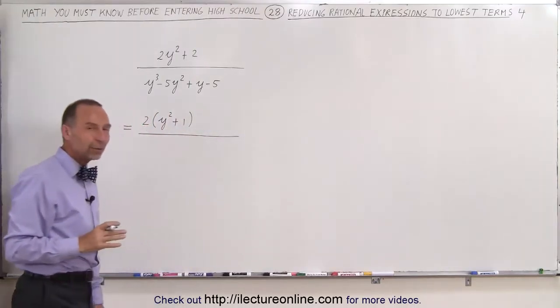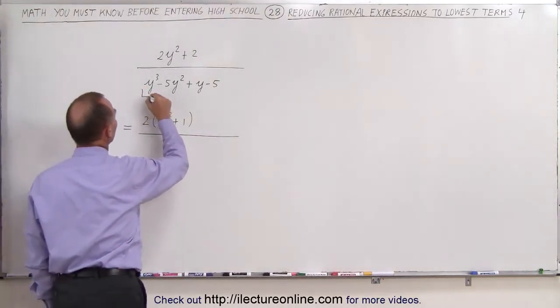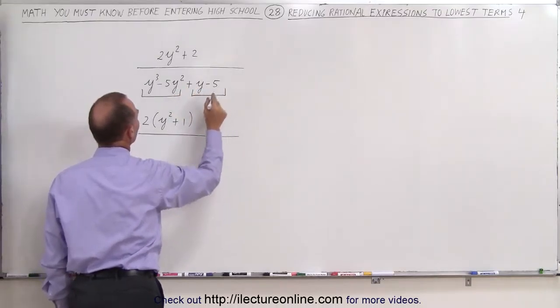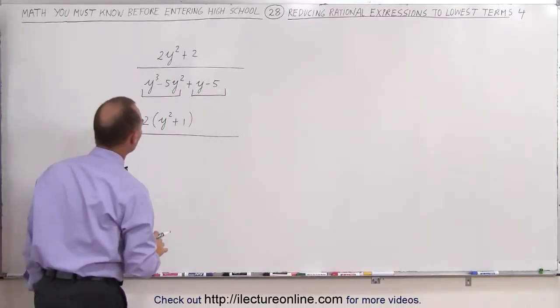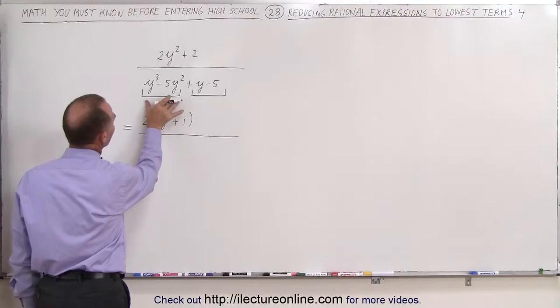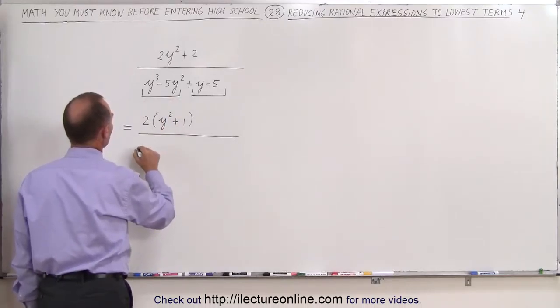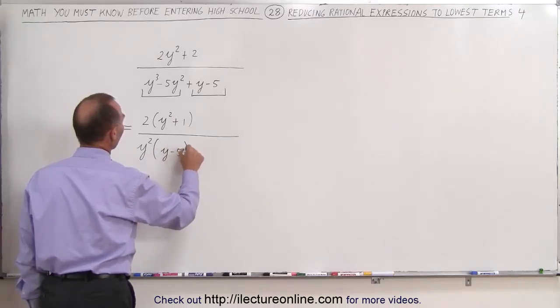In the denominator, we can group that in two groups of 2 and then see if there's something common in each group. In the first group, we can factor out y squared. So when we do that, we get y squared times y minus 5.